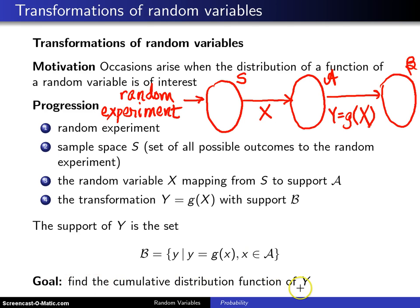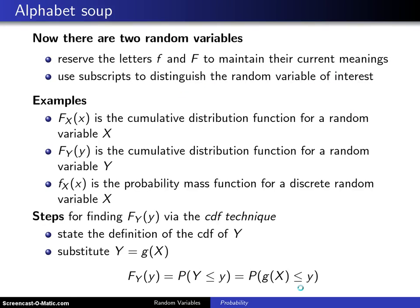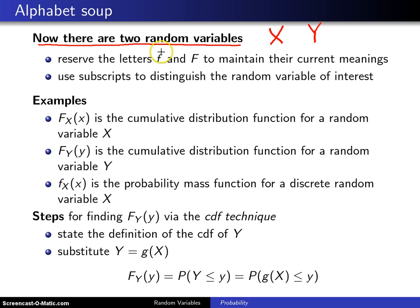The goal in this case is to find the cumulative distribution function of Y. It's a little bit confusing here because now there are two random variables: capital X and capital Y. We are going to continue to reserve the letters little f and capital F to hold their current meanings. Capital F will always be a CDF, and little f will always be either a probability mass function, if X and Y are discrete, or a probability density function, if X and Y are continuous.